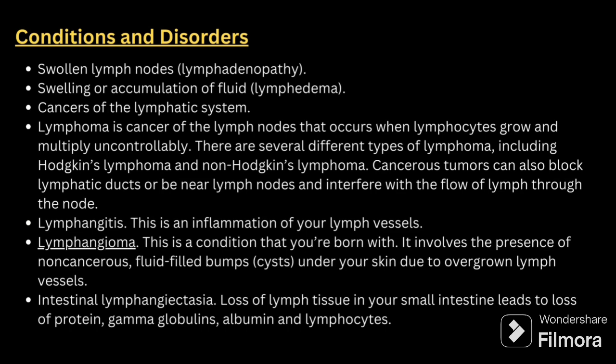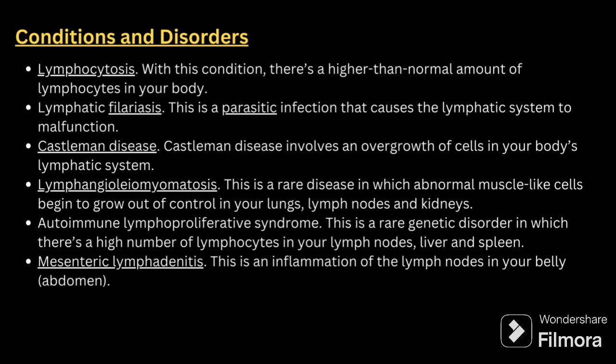Next is lymphangitis, the inflammation of your lymph vessels. Then lymphangioma, and intestinal lymphangiectasia, which is loss of lymph tissue in the small intestine leading to loss of protein. Lymphocytosis is a higher-than-normal amount of lymphocytes in the body. Lymphatic filariasis is a parasitic infection that causes the lymphatic system to malfunction. Castleman disease involves the overgrowth of cells in the body. Lymphangioleiomyomatosis is a rare disease where muscle-like cells grow out of control in the lungs, lymph nodes, and kidneys. Autoimmune lymphoproliferative syndrome is a rare genetic disorder with a high number of lymphocytes in the lymph nodes, liver, and spleen. Finally, mesenteric lymphadenitis is inflammation of lymph nodes in the abdomen.